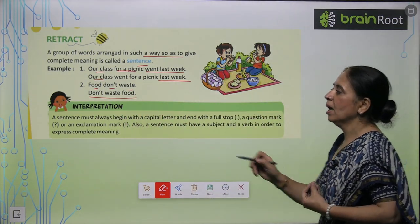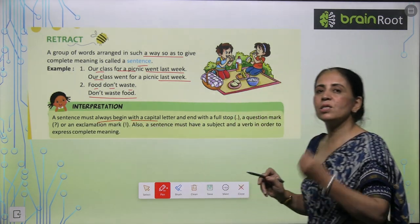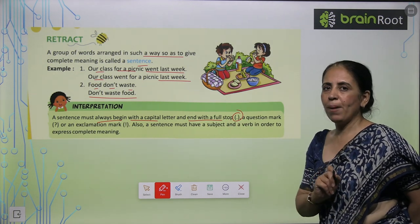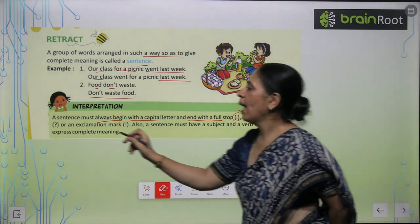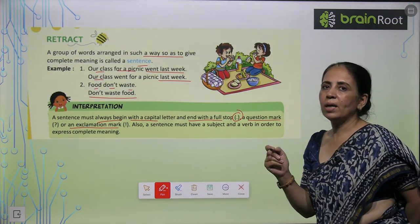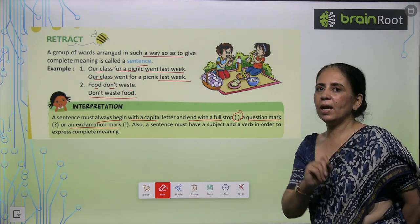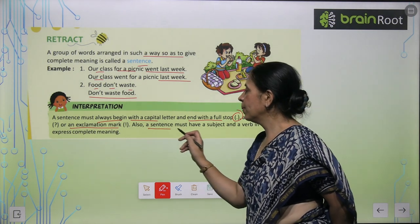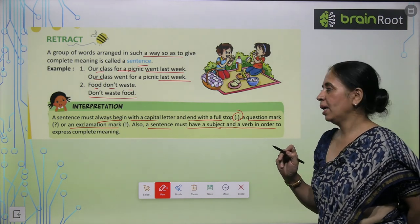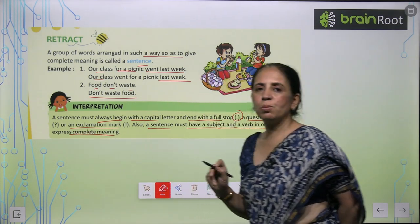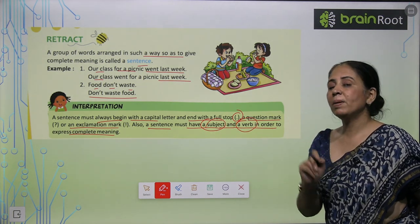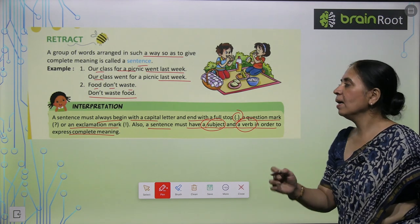So what do you interpret? A sentence must always begin with a capital letter. Always remember, a sentence must have a subject and a verb in order to express complete meaning. We must always have a subject and a verb, and a sentence must have complete meaning.